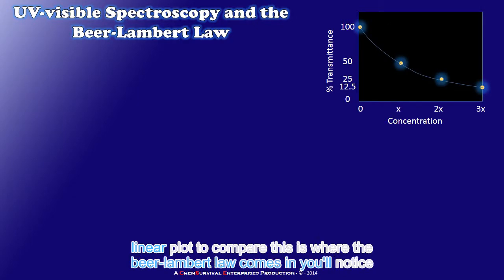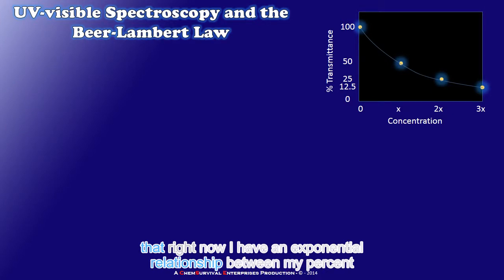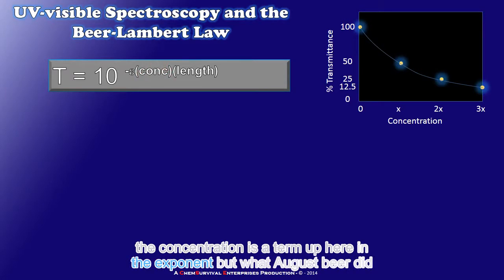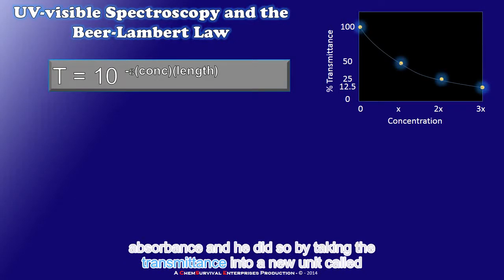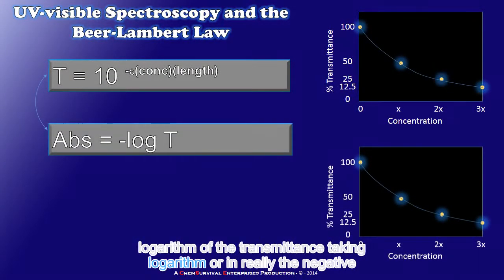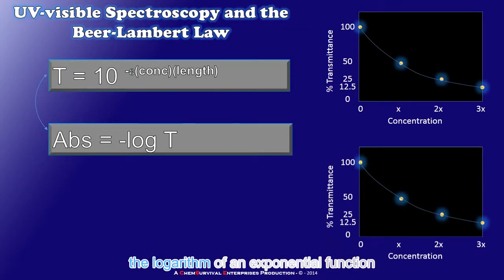This is where the Beer-Lambert law comes in. You'll notice that right now I have an exponential relationship between my percent transmittance and my concentration. We can see that in the equation here where the concentration is a term up here in the exponent. But what August Beer did was to convert that percent transmittance into a new unit called absorbance. And he did so by taking the logarithm or really the negative logarithm of the transmittance.